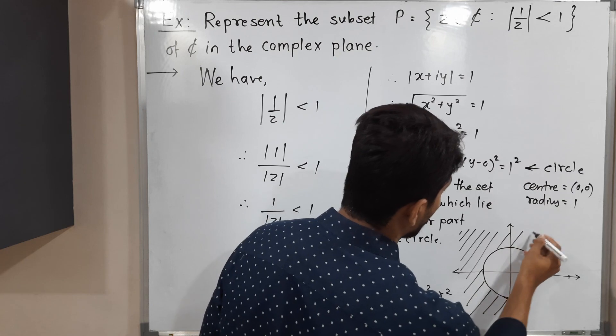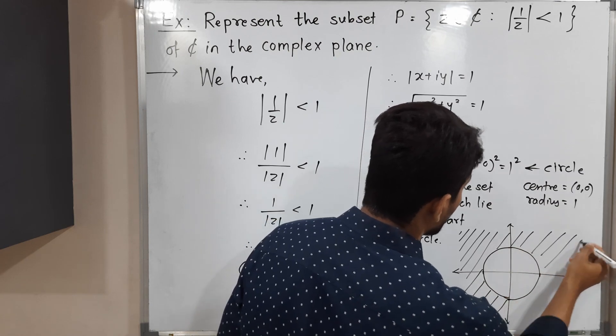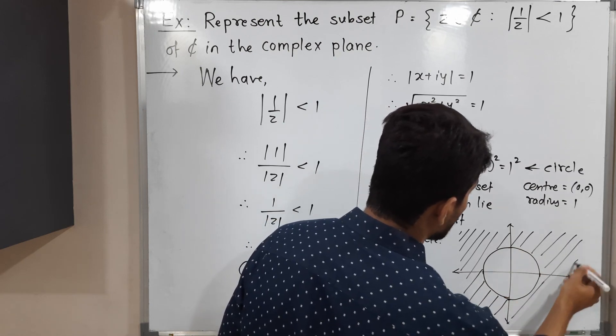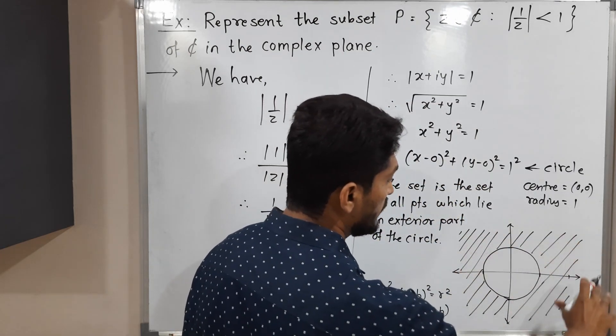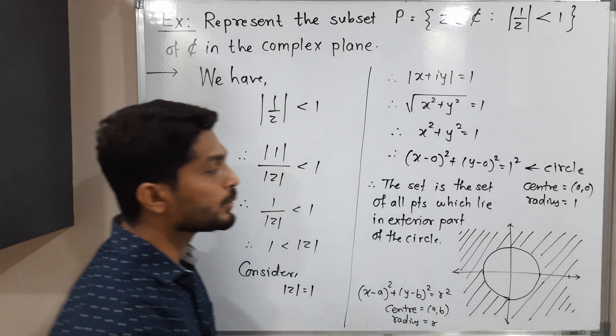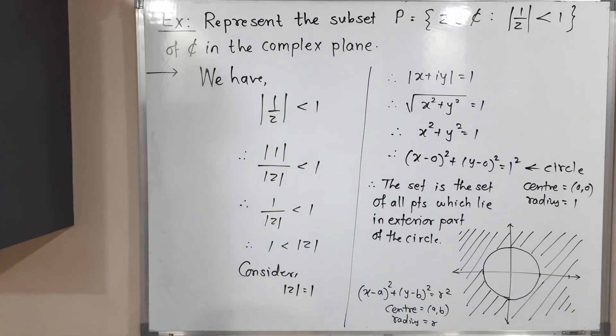We should consider only those points which lie outside the circle. In this way we have represented the given set P in the complex plane. Thank you, see you.